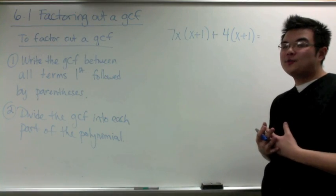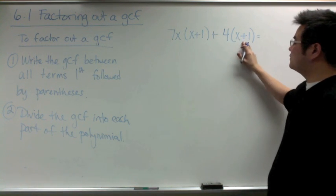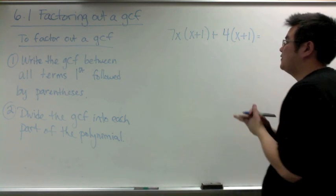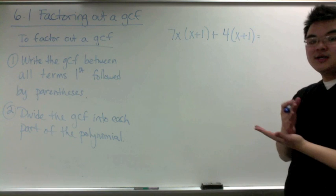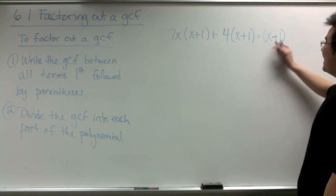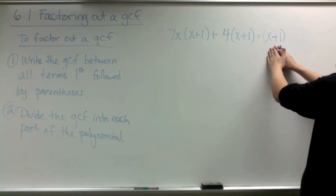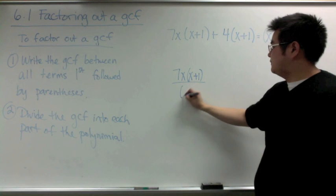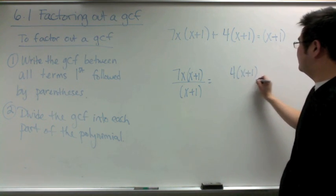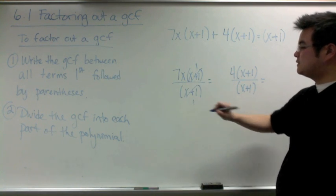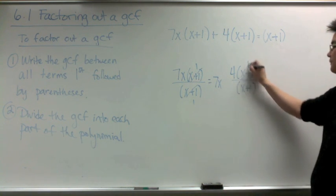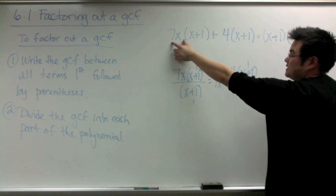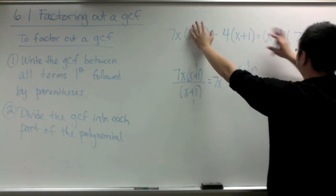In the next example, we still have a binomial, but it looks a little strange because we have binomials inside parentheses. As a whole term though, it's a binomial because we have two monomials separated by addition. The GCF between the two parts is (x + 1). We keep it in parentheses and divide (x + 1) into each of the parts. Recall that anything over itself equals 1, so the first part gives 7x and the second gives 4. What is left in the parentheses is 7x + 4, giving us (x + 1)(7x + 4).